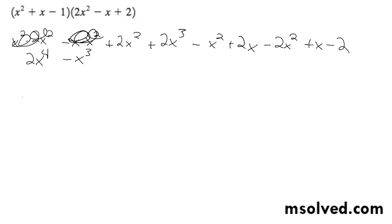So combine like terms. There's no x to the fourth, so it's just 2x to the fourth. For x cubed, we got a plus, so this becomes just plus x cubed.